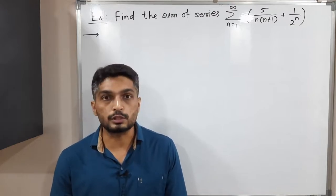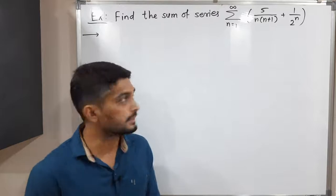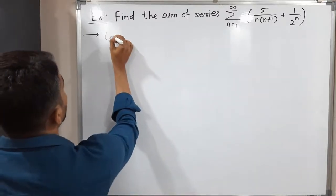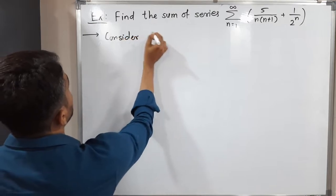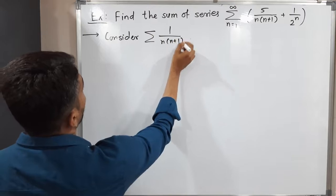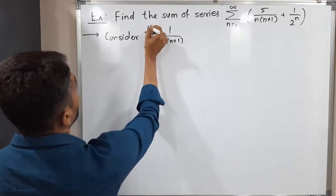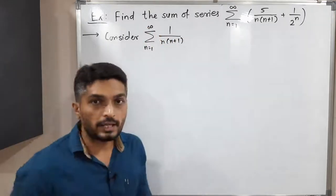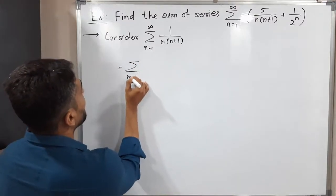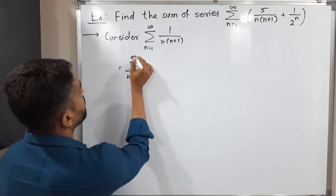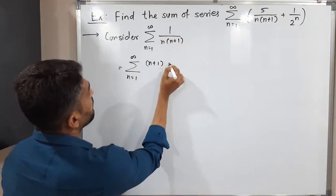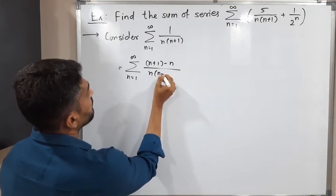So those things we are going to use here. For that, I'm going to consider the series: summation of 1/(n(n+1)), n running from 1 to infinity. This series can be expressed in a different way — it is equal to summation, n running from 1 to infinity, where the numerator 1 can be expressed as (n+1) minus n.